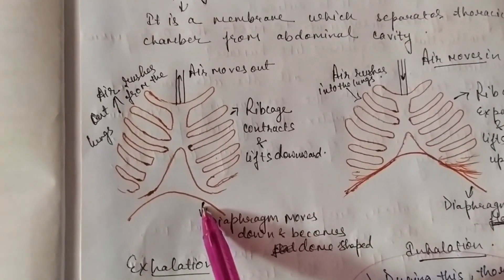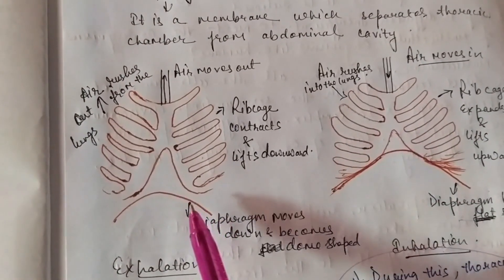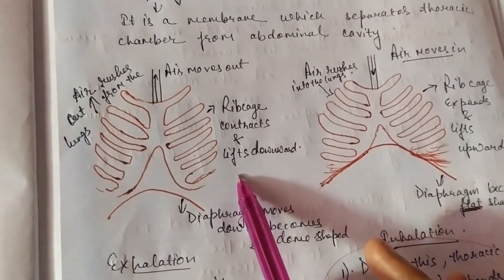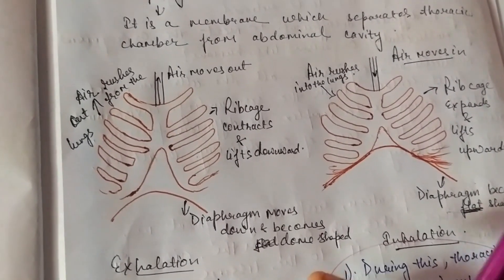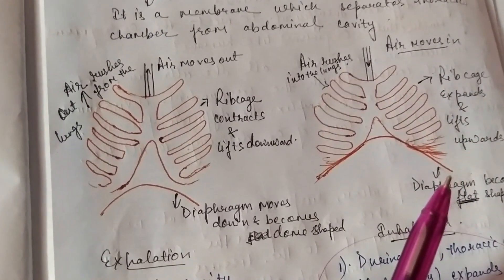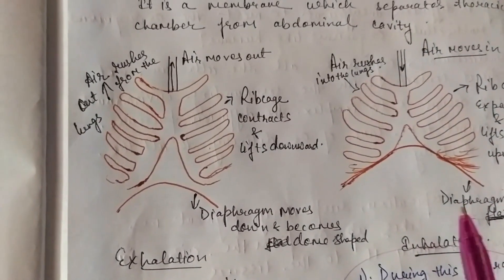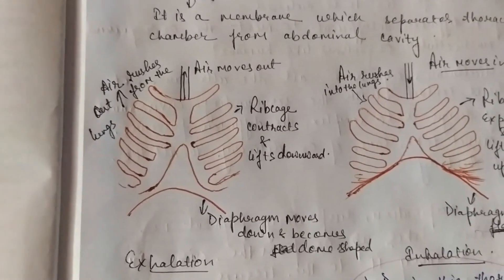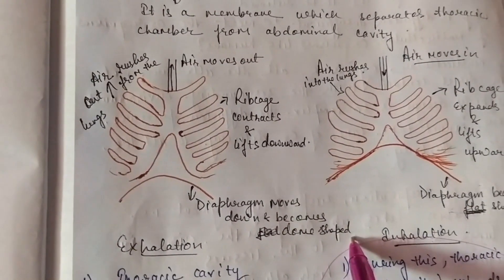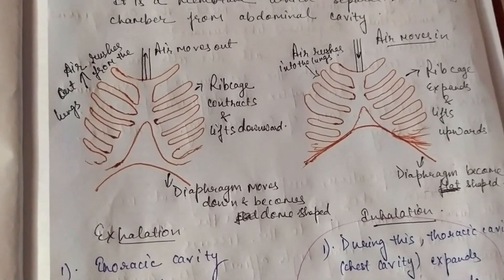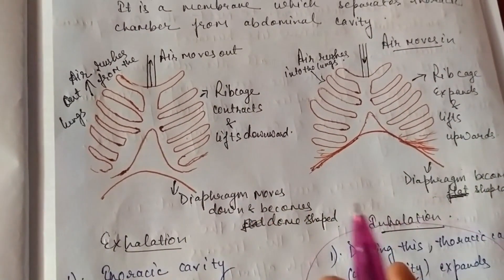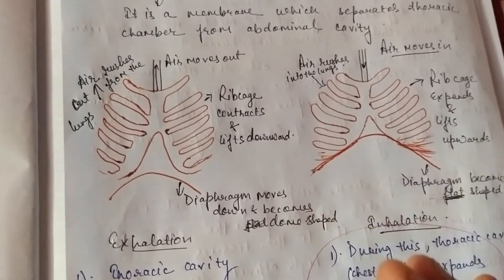In the case of exhalation, it is the opposite. When any person breathes out, the rib cage contracts and the ribs lift downward. Therefore the volume of the lungs decreases and the air goes out. As a result, the diaphragm becomes dome-shaped. In inhalation the diaphragm becomes flat, but in exhalation the diaphragm becomes dome-shaped.